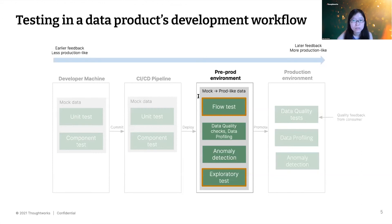Another technique to call out is flow tests. In a similar vein to unit tests and component tests, these are for testing transformations but with a broader scope. If you have a data product that is more complicated and requires a fair bit of orchestration, this is what you can use to test that. For less complicated data products, component tests suffice — you don't need a separate flow test.